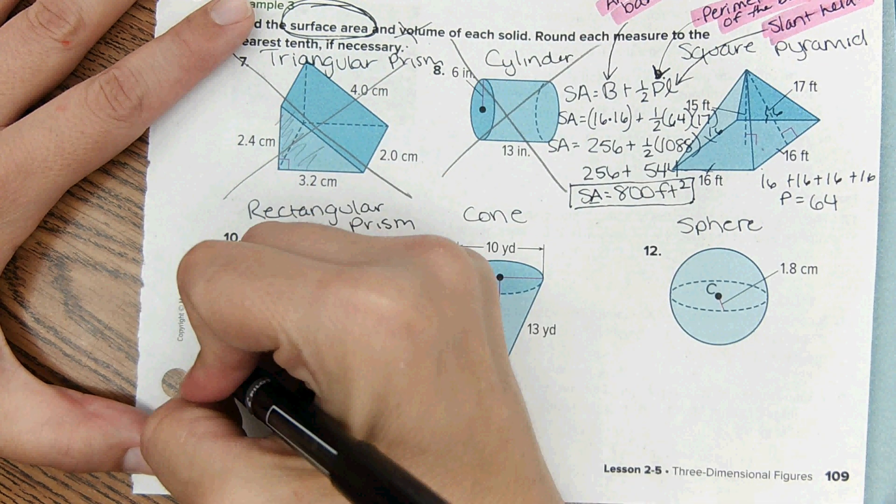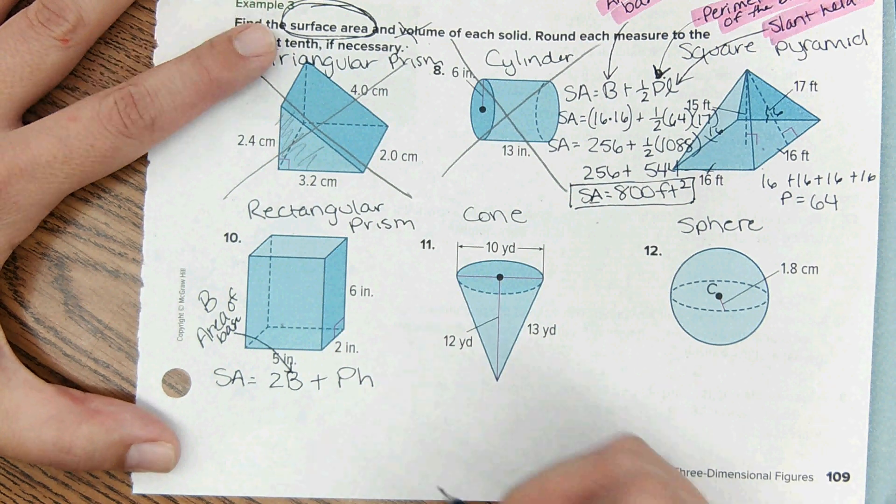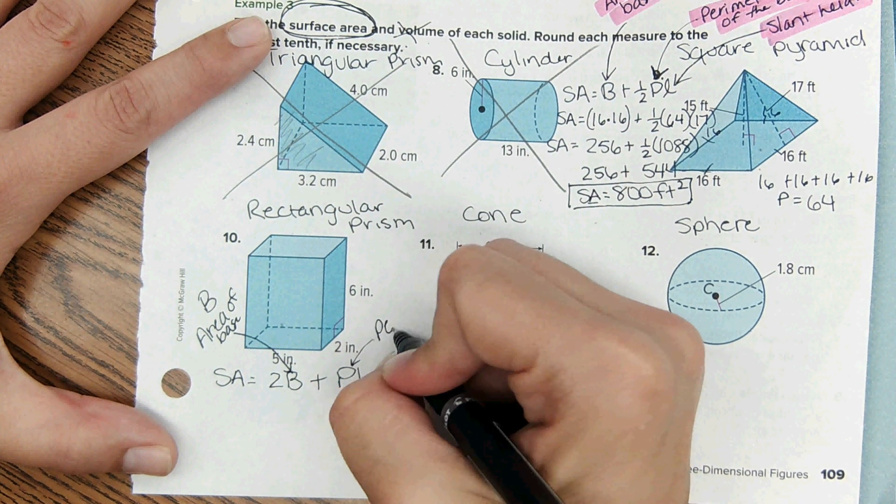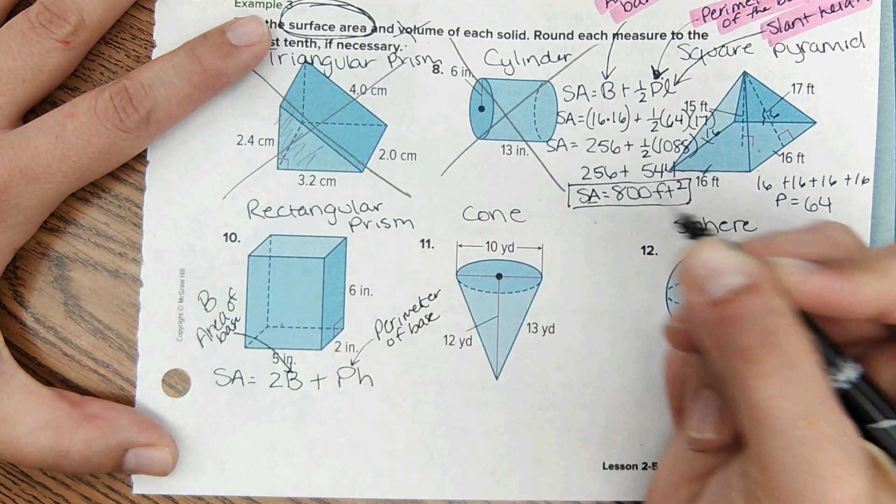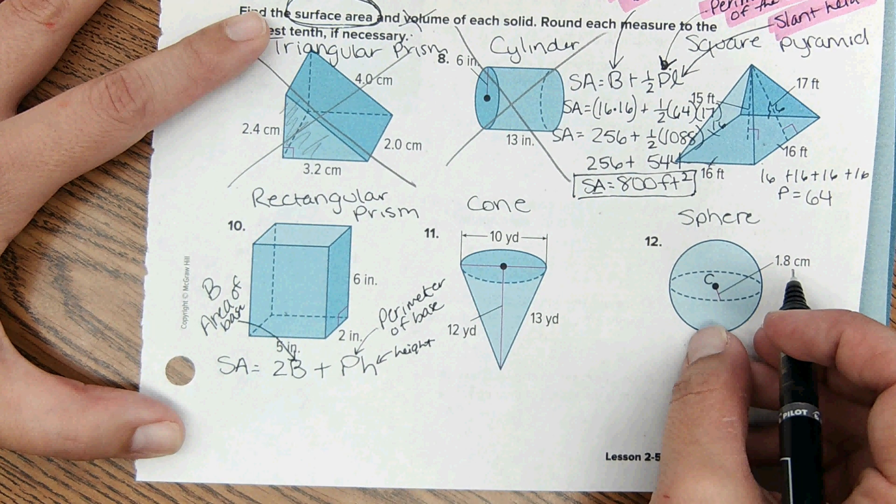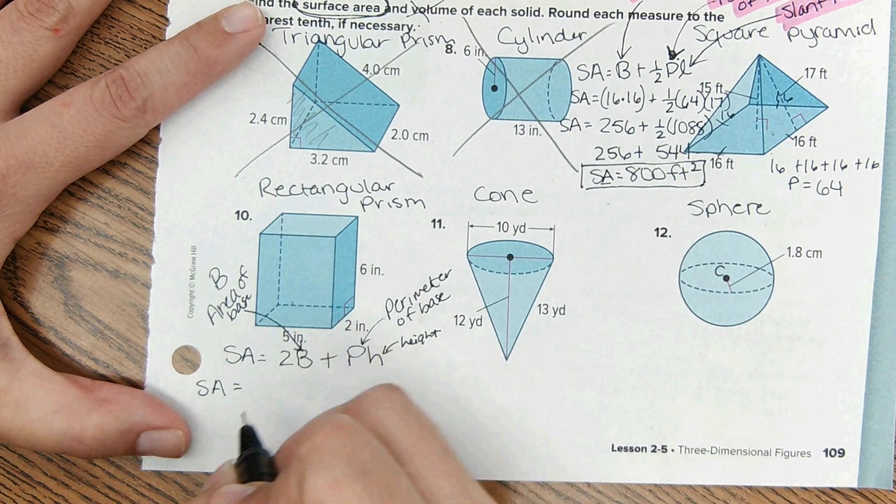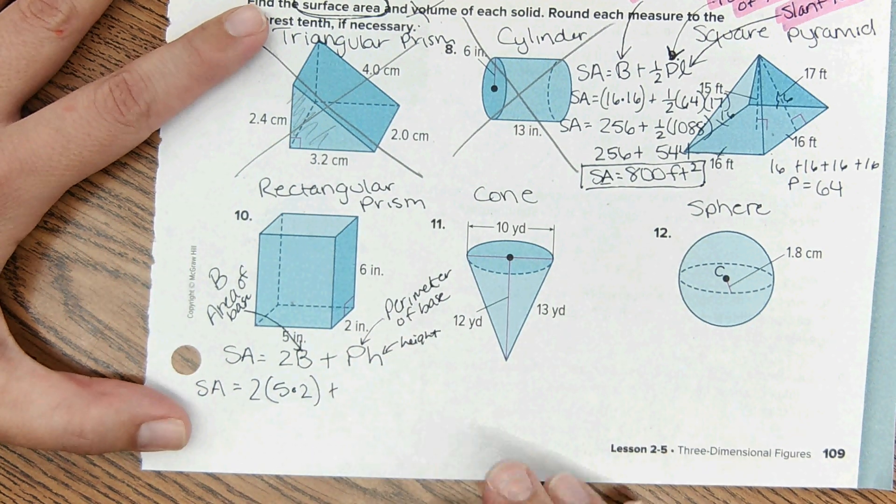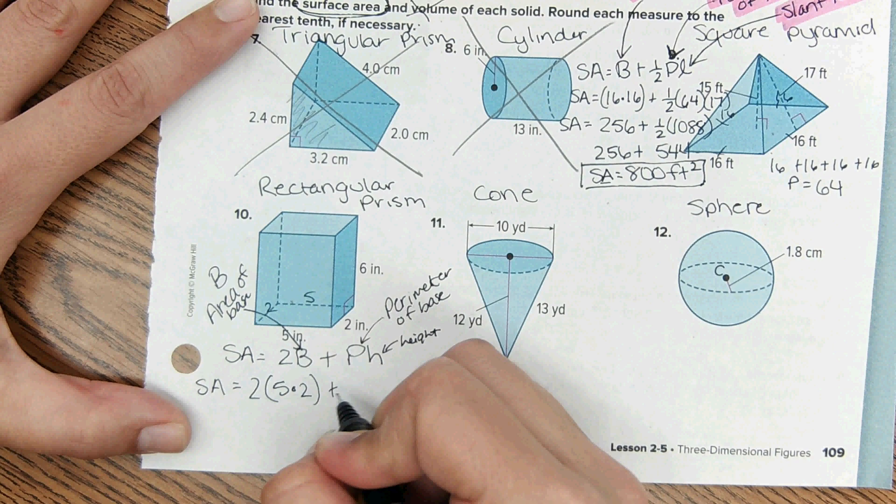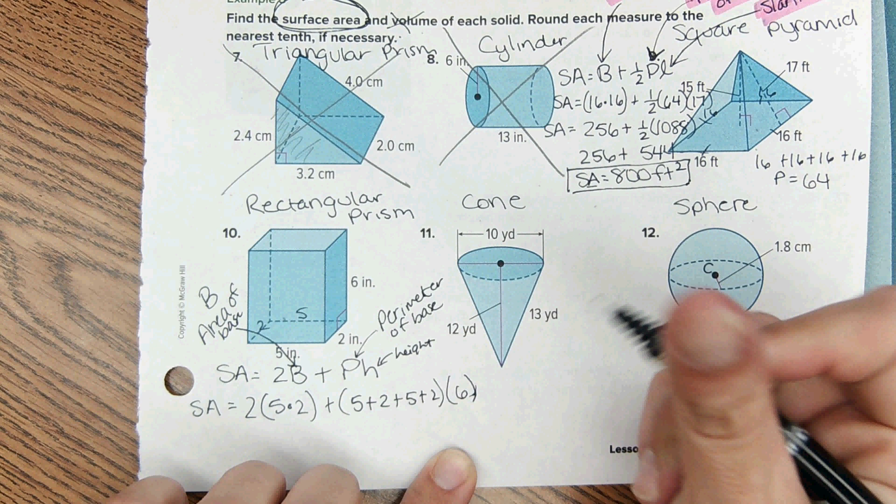Okay, capital B stands for area of the base, and then P is perimeter of the base, and then of course H is height of the prism. Okay, now we plug numbers in. SA equals area of the base - it's a rectangle so 2 times 5 times 2 to find the area of that bottom rectangle - perimeter of the base would be 5 plus 2 plus 5 plus 2, and then the height of the prism is 6.